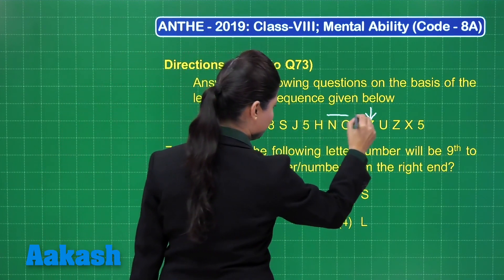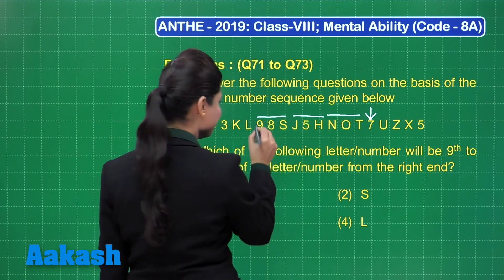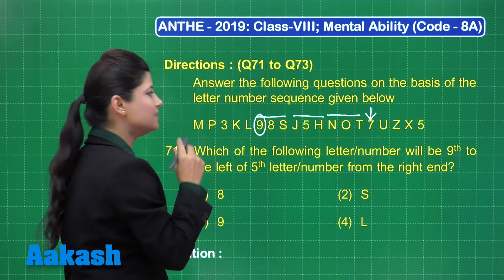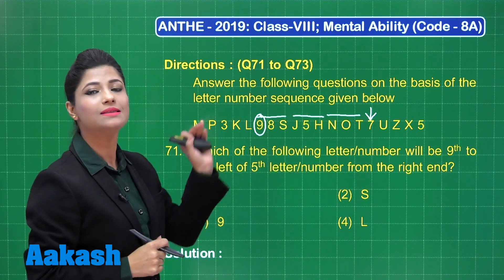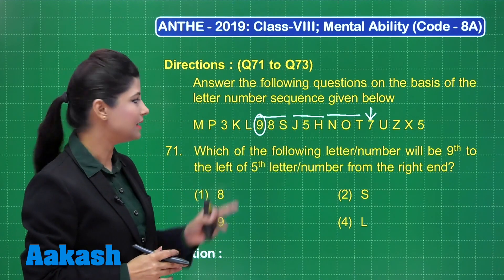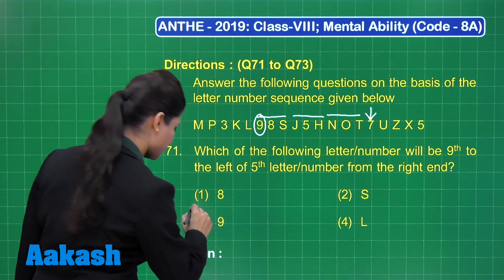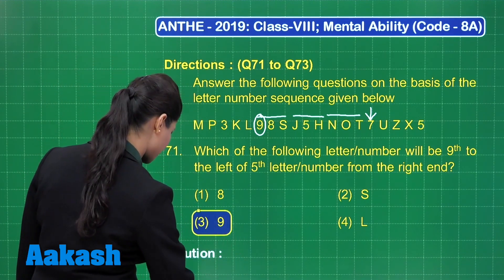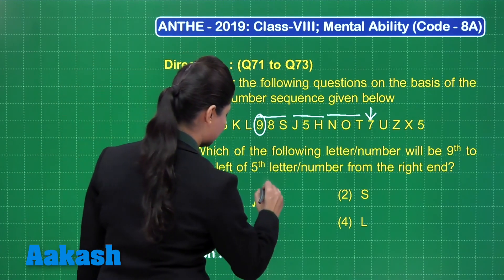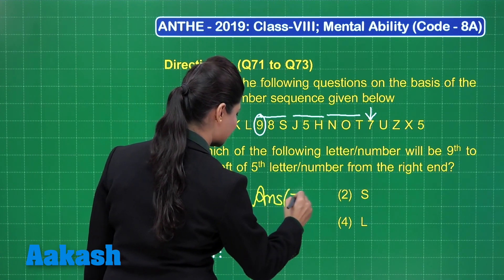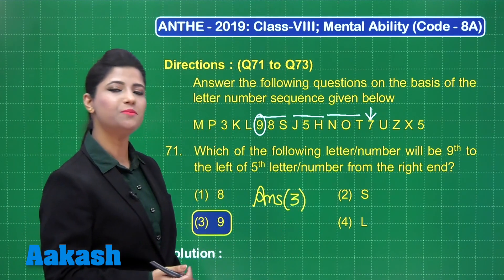We move nine positions to the left of number seven. This is the letter or number lying at the ninth position to the left. So this is the required answer for this question, which is present in option number three, that is nine. You can mark your answer as option three.